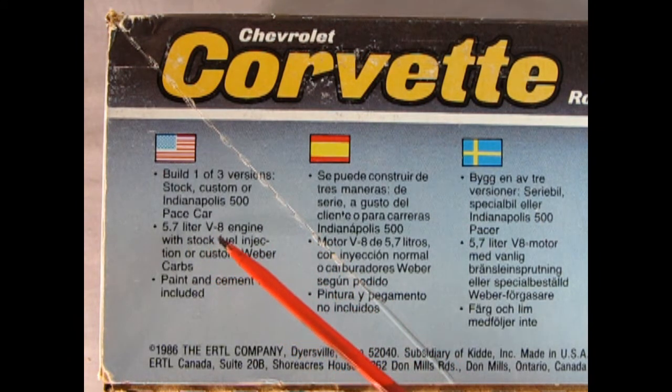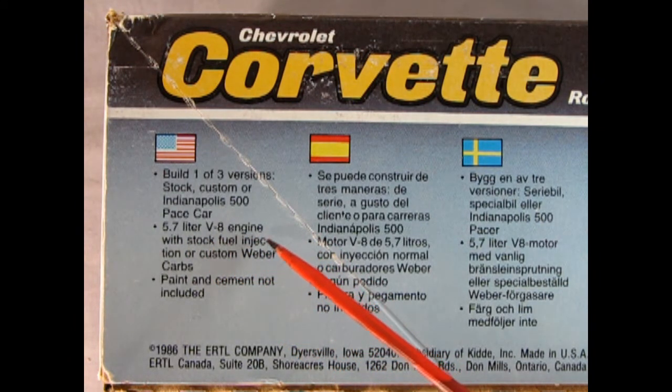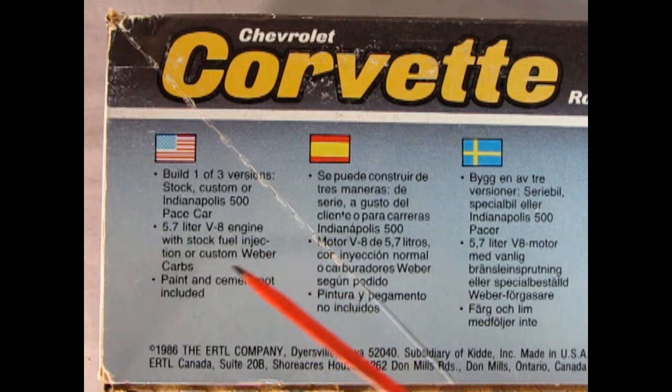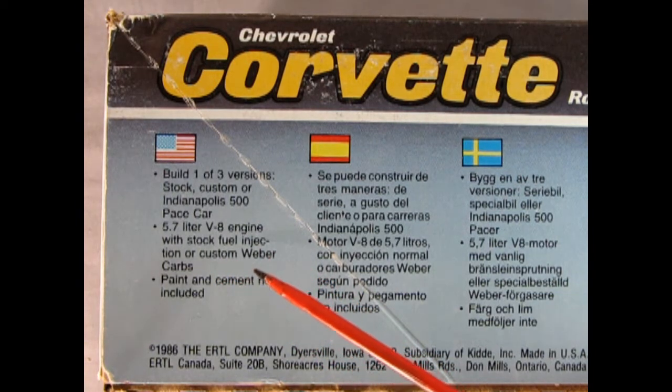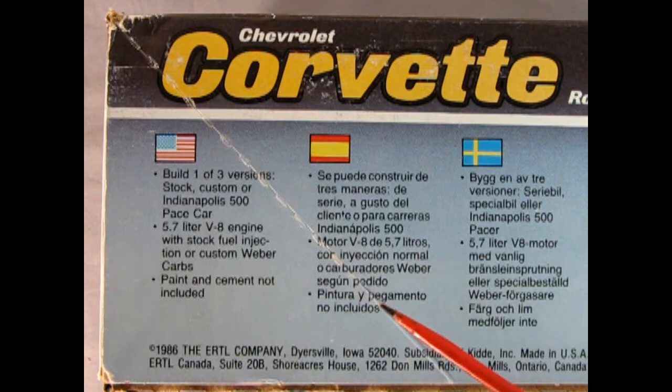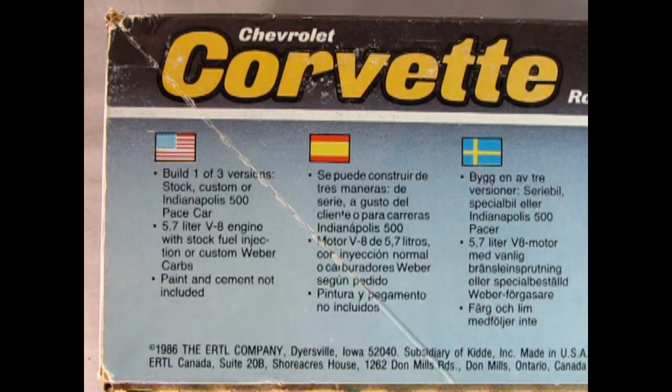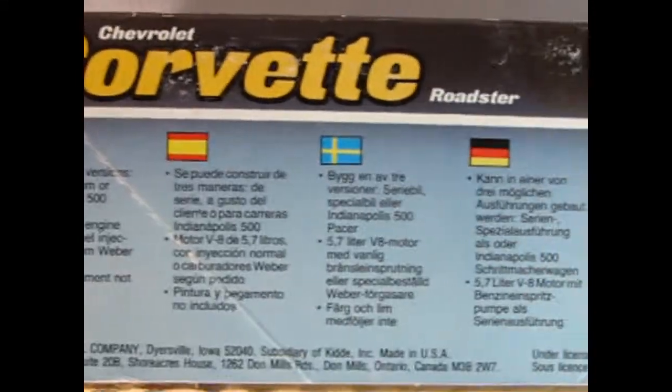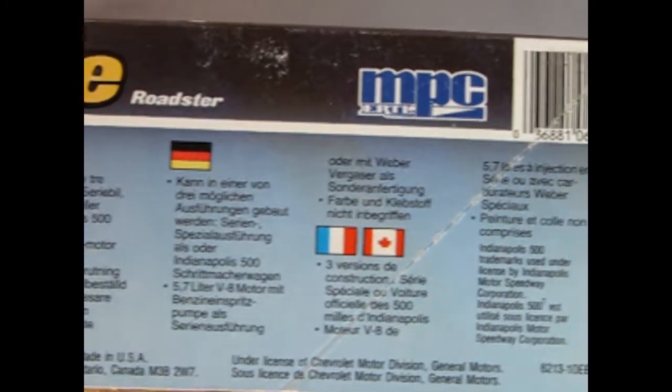There's details in English, Spanish, Swedish, German, and French Canadian. Build one of three versions: stock, custom, or Indianapolis 500 pace car, which is also unique to the '86 Corvette. It has a 5.7 liter V8 engine with stock fuel injection or custom Weber carbs. Paint and cement are not included.